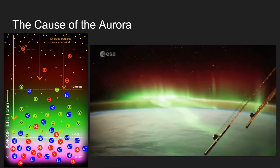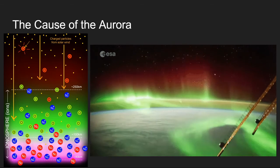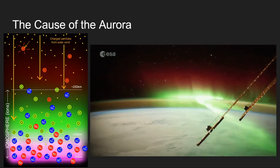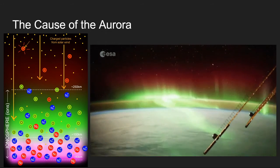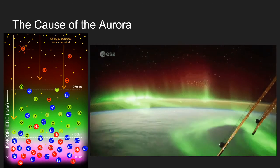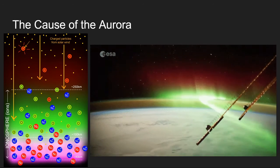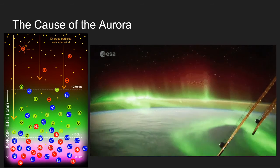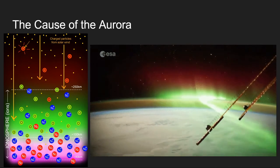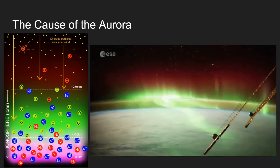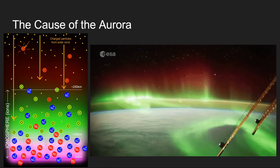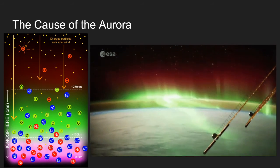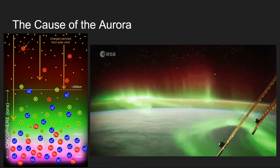Those auroral zones we saw earlier can change — getting bigger or smaller — depending on how strong the solar wind is at any time, because just like any wind here on Earth it changes strength. If we have a flare that heads our way, that could make a lot more particles get through and hit our atmosphere, causing bigger, brighter, stronger auroras.